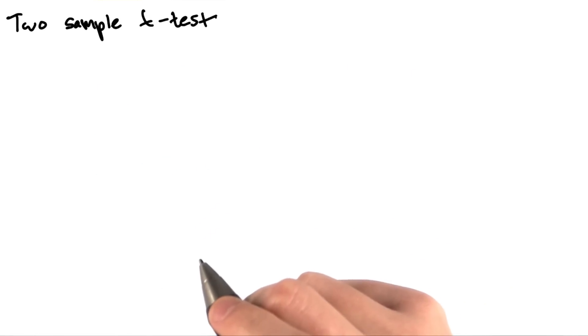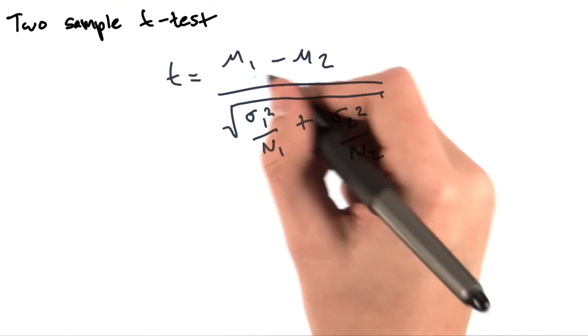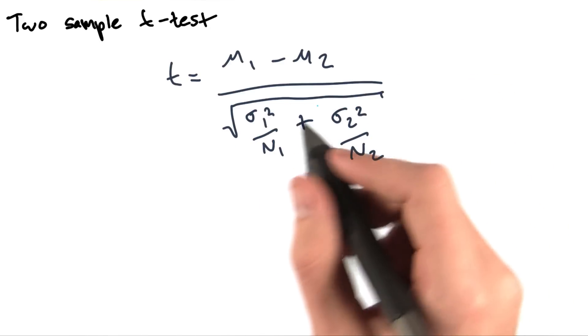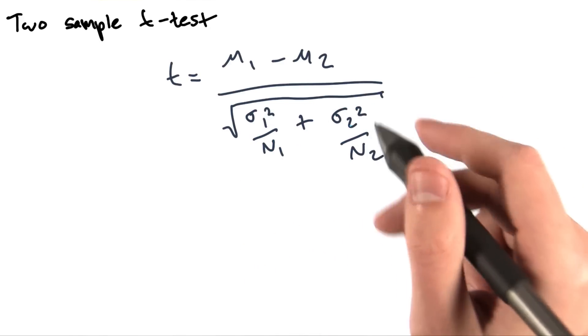In Welch's t-test, we compute a t-statistic using the following equation. t equals mu1 minus mu2, divided by the square root of sigma1 squared over n1, plus sigma2 squared over n2.